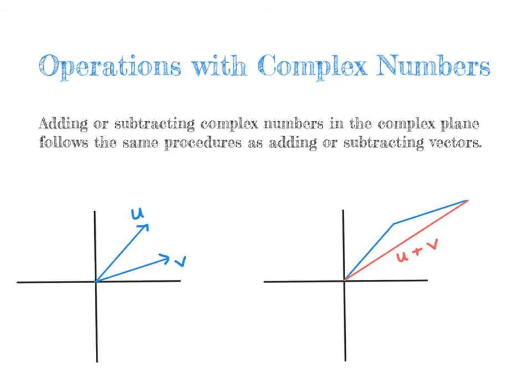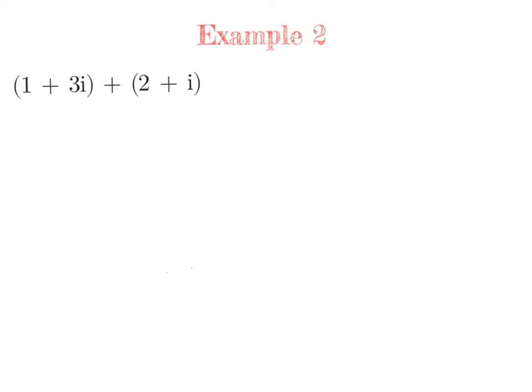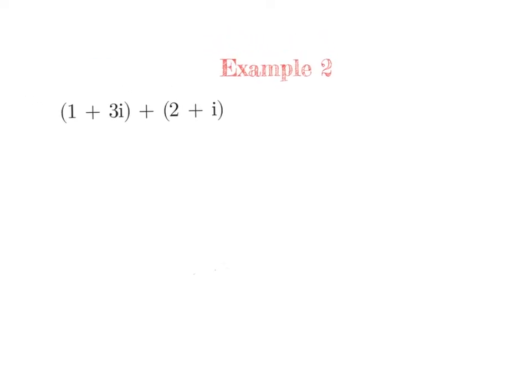Operations with complex numbers follow the same procedures as adding or subtracting vectors. However, we have added and subtracted complex numbers before, so you don't have to use vectors — this is just representing it in the complex plane. Essentially, we are just combining like terms. Let's see if we can add up these two complex numbers, combining our real and imaginary numbers, but let's look at them in terms of a vector representation.